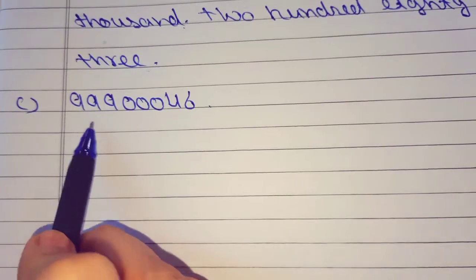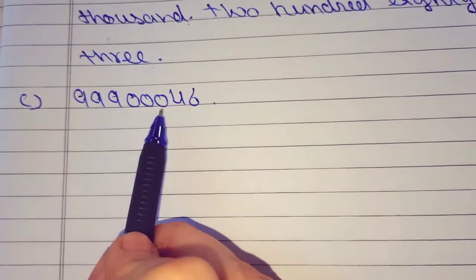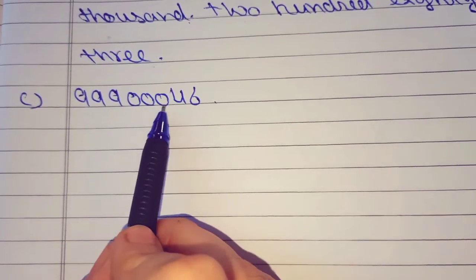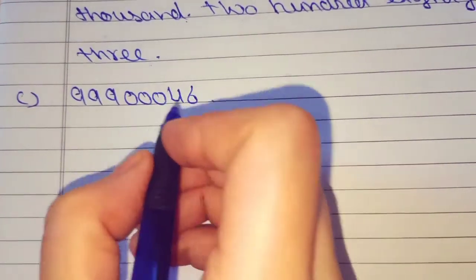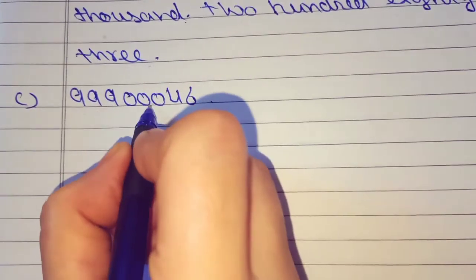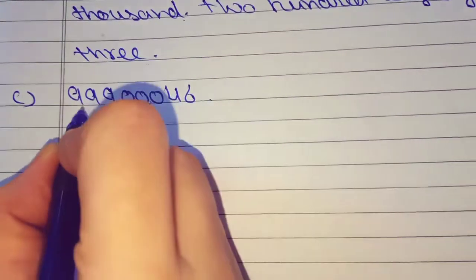C part mein hamare paas figure hai: 9, 9, 9, 0, 0, 0, 4, 6. Commas put karte hain: 3 ke baad, 2 ke baad, 2 ke baad.